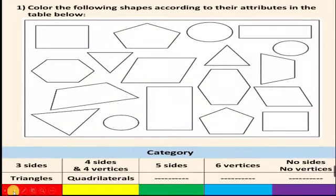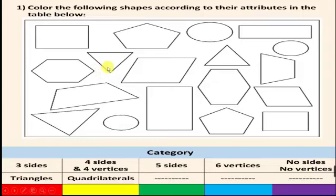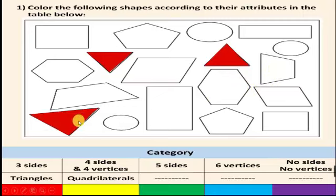Let's see another example. Here I have many shapes and I want to put them in categories. The first category is three sides — shapes that have three sides only, and that is the triangles. I will color them in red. I found three shapes that are all triangles with three sides, and I colored them in red.